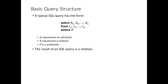For basic queries, to retrieve information from the database we use SELECT. The syntax is: SELECT A1, A2 FROM R1, R2 WHERE P — where A represents attributes, R represents relations, and P is the predicate or condition. This allows you to select specific attributes from specific relations with a given condition.